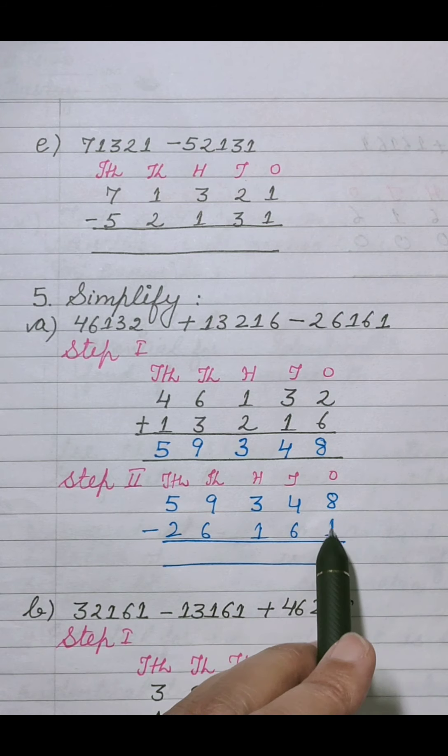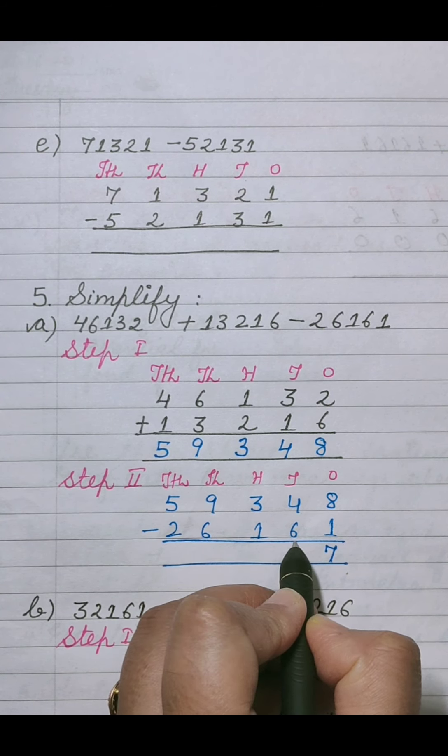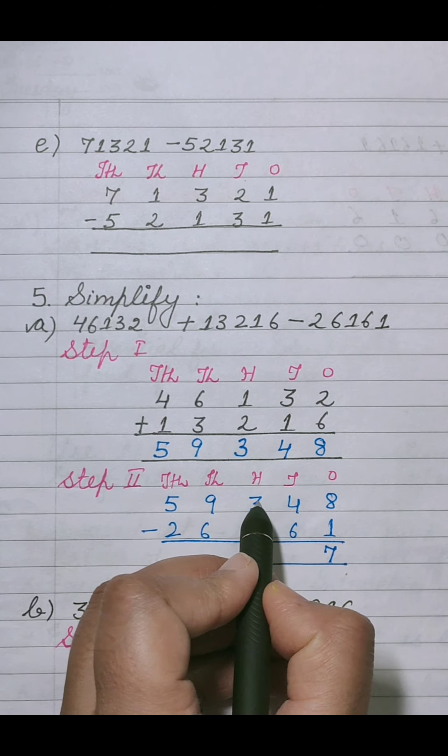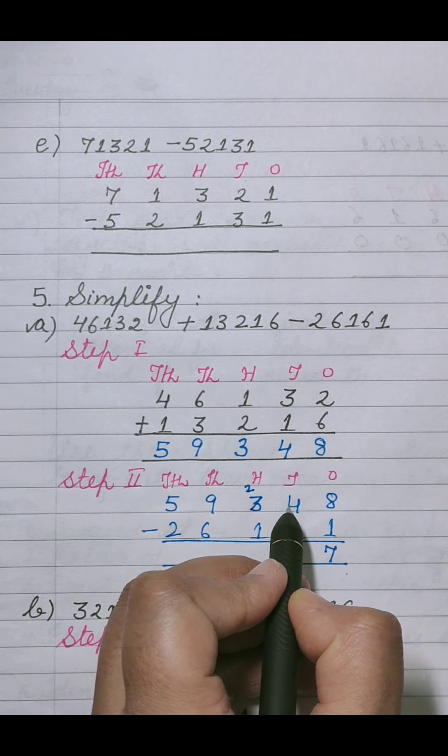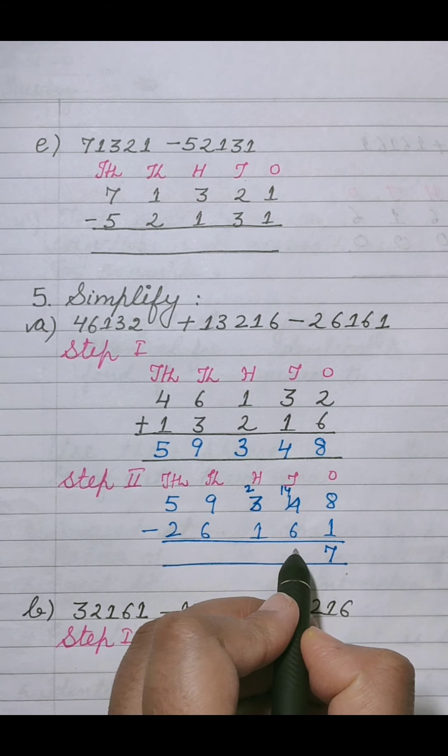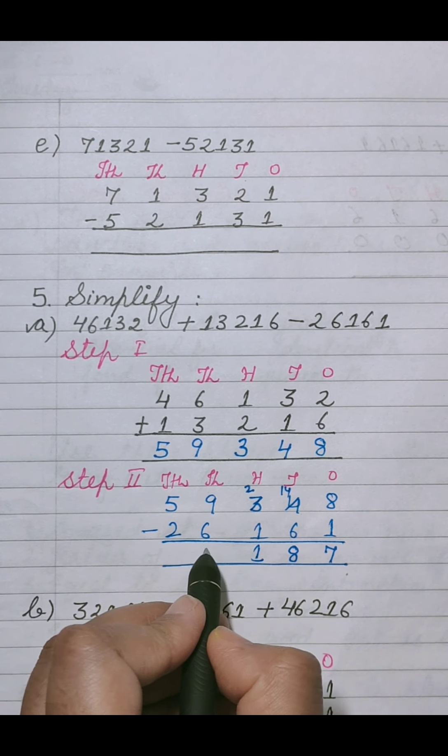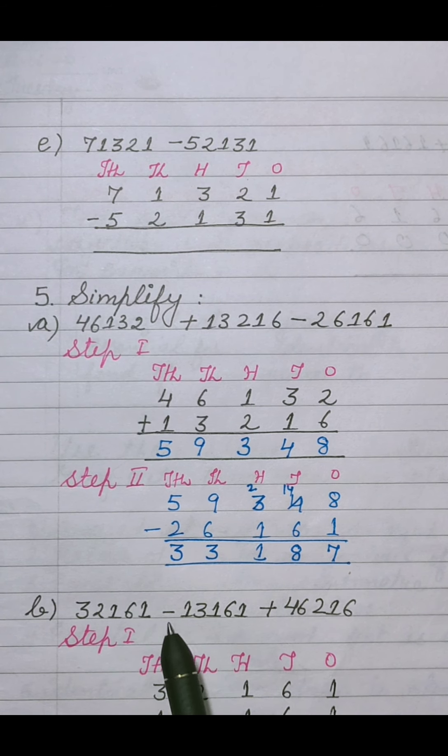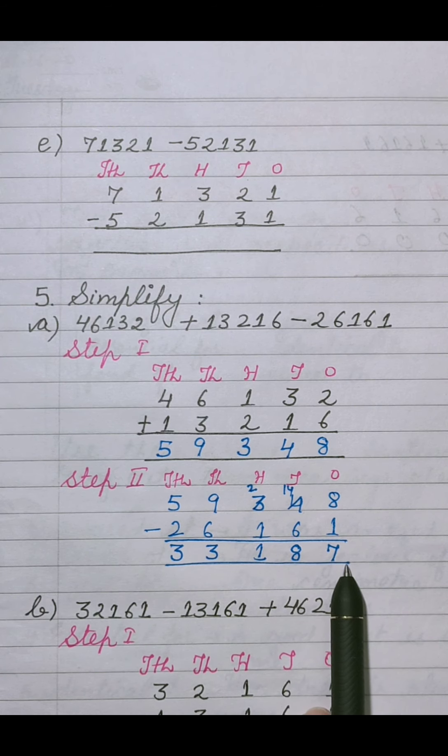Now we will subtract 8 minus 1 is 7. 4 minus 6 is not possible, so we will subtract 100 from 3 hundreds. 100 is equal to 10 tens. 10 tens plus 4 tens is equal to 14 tens. 14 minus 6 is 8. 2 minus 1 is 1, 9 minus 6 is 3, 5 minus 2 is 3. Answer is 33,187. Clear?